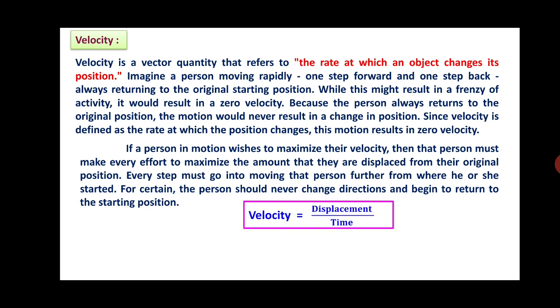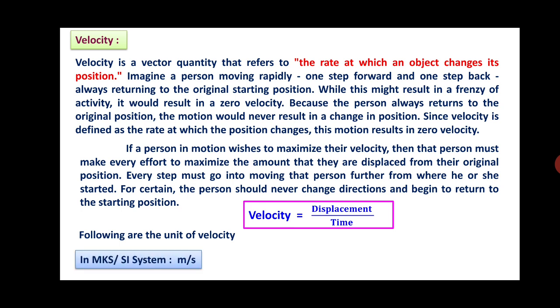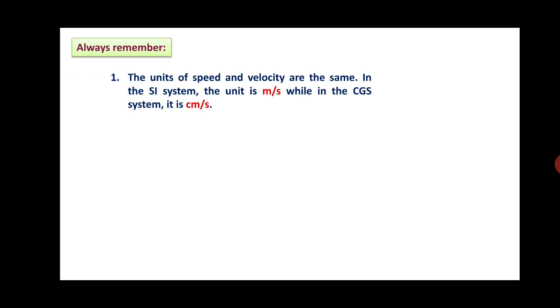Velocity mathematically can be expressed as: velocity is equal to displacement divided by time. In the MKS or SI system, velocity is measured in meters per second, and in the CGS system, it is centimeters per second. Note that meter per second can also be written as m·s⁻¹, and centimeter per second as cm·s⁻¹.